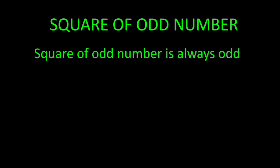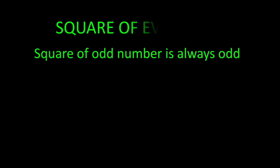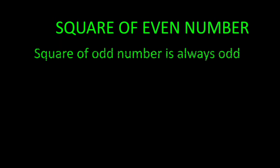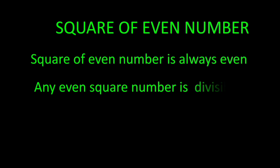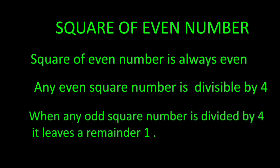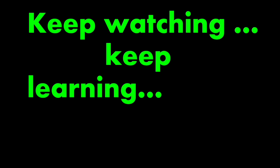Already you have learnt that the square of an odd number is odd and the square of an even number is always even. But do you know that when we divide any even square number by 4, it is exactly divisible? And when any odd square number is divided by 4, it always leaves a remainder of 1. Isn't this interesting? So keep watching, keep learning.